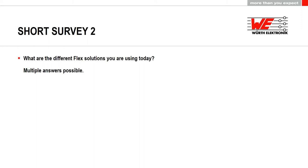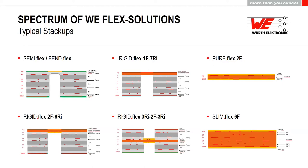Now I want to start with the spectrum of all the different flex solutions. There are a lot of options. The first is what we call semi-flex or bend-flex — this is roughly a full rigid board where we thin the FR4. This is done by defined-depth milling, or we can use spacers. There are different possibilities to create this thin FR4 part.